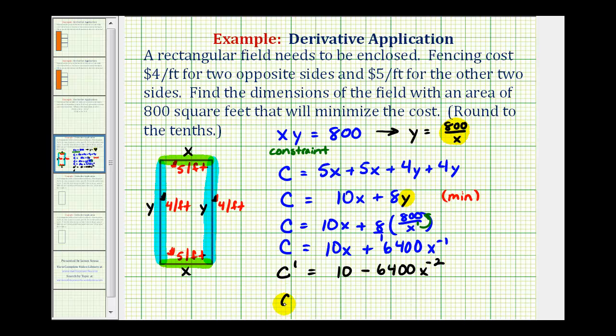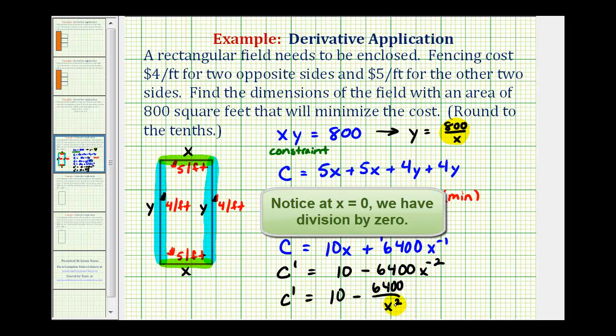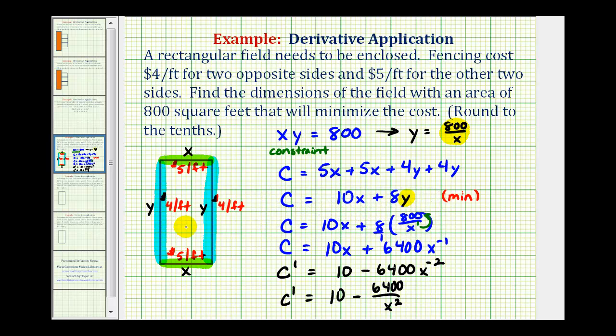This would be undefined when x is equal to zero, but if x is equal to zero, the area of this rectangle would be zero, and therefore we're not going to consider that as a critical number. So now we're going to set this equal to zero and solve for x. Let's do that on the next slide.